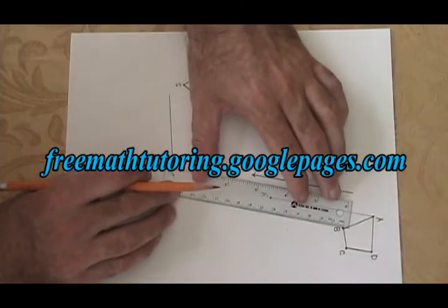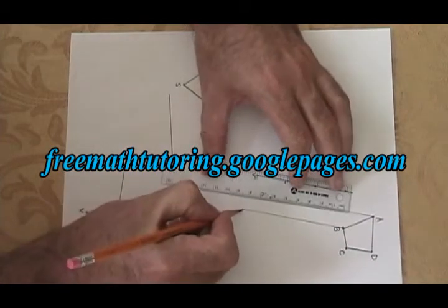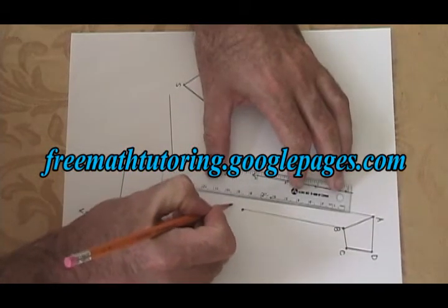Once you are satisfied that they are parallel, you draw your eight and a half centimeter line. That started from B, so it ends at B prime.